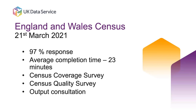The England and Wales Census was held on 21st March 2021, with a 97% response rate, which is phenomenal. The average completion time was just 23 minutes for the online census. Following that, there was a census coverage survey where ONS found where coverage was good or lacking and tried to fill in the gaps. There was also a census quality survey to understand how questions were answered, and output consultation with interested groups including local authorities, charities, community groups, and commerce.